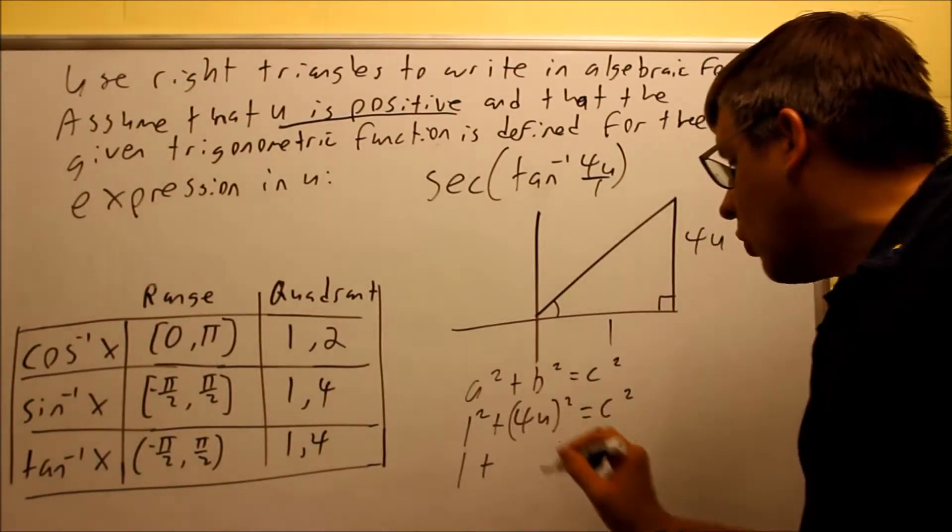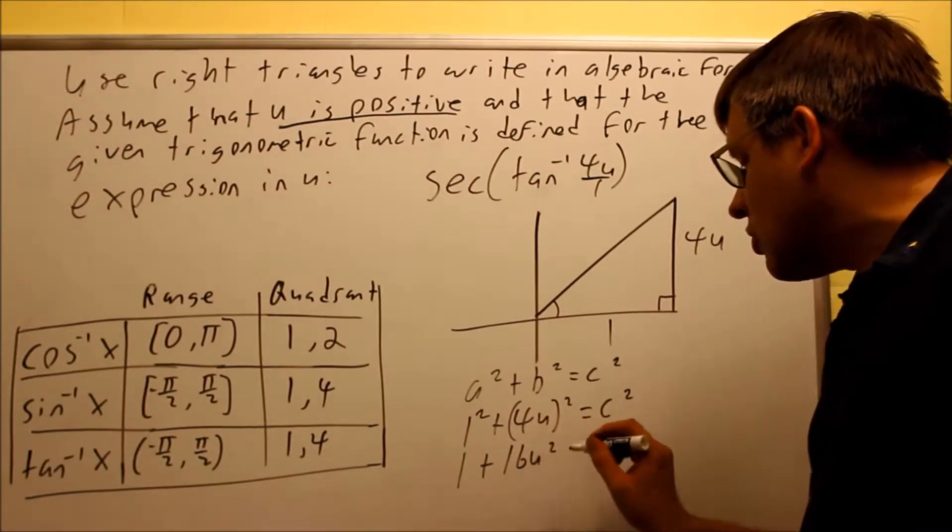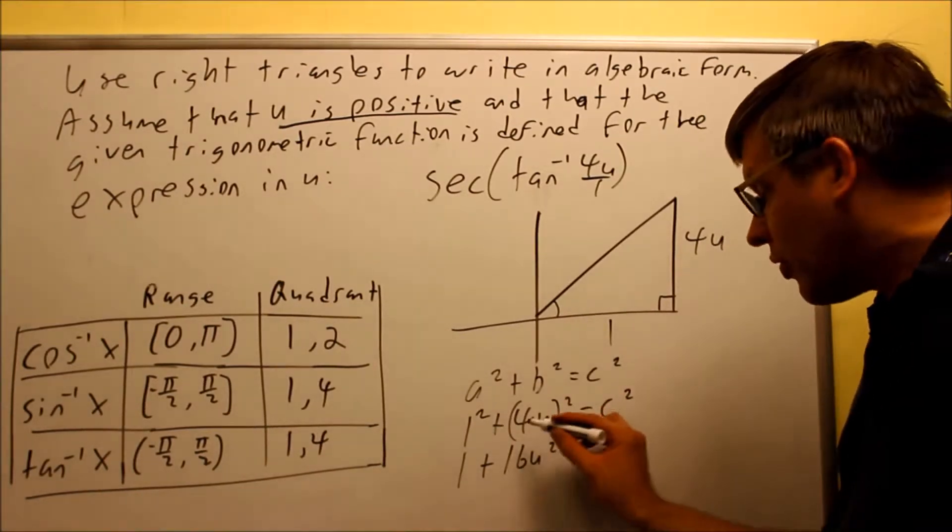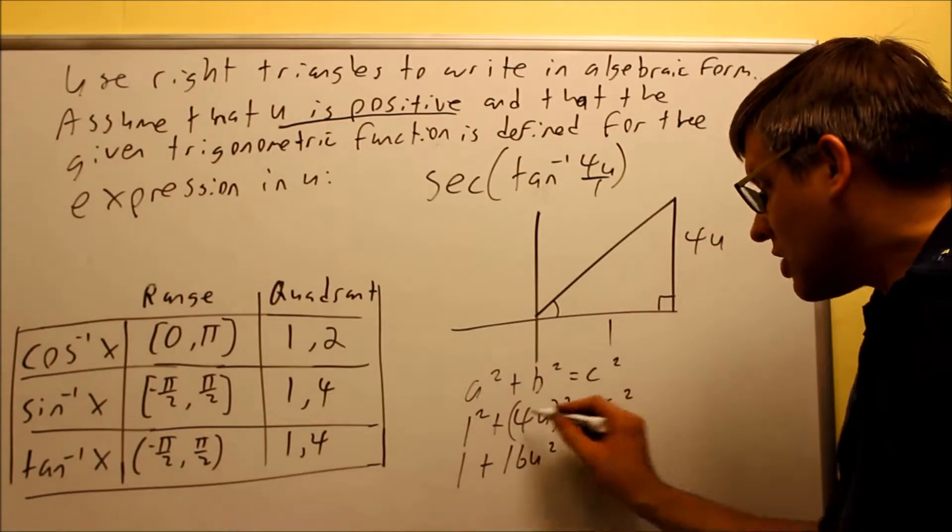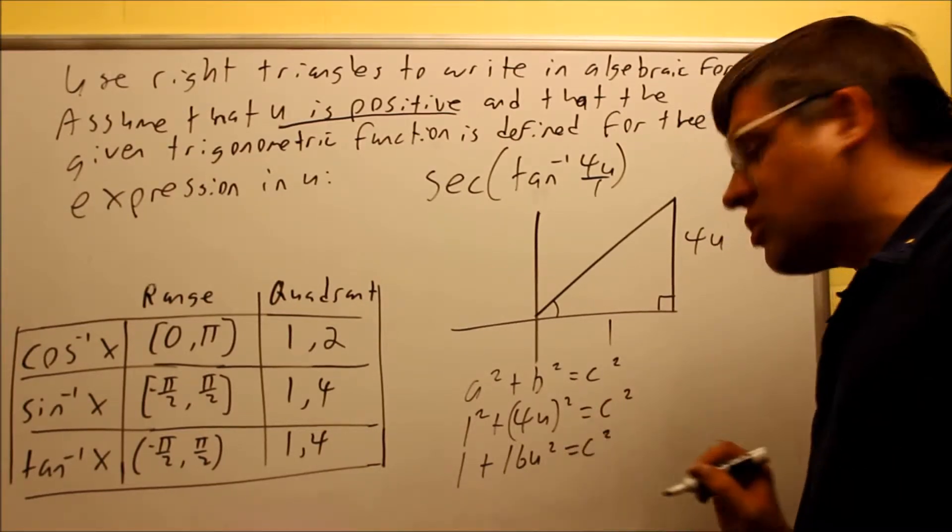So when I work this out, I get 1 plus 16U squared. Don't forget that you have to square both things inside those parentheses there. Square both of those. That equals C squared.